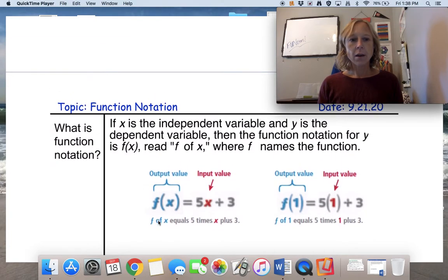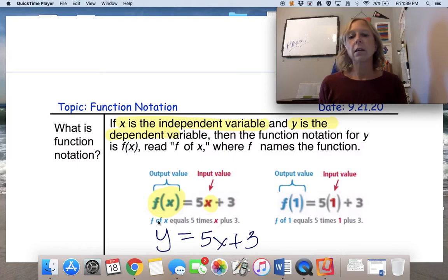So first thing, what is function notation? In function notation, x is what we call the independent variable, and y is the dependent variable. Then the function notation for y is read f of x, and f names the function. So that's the way we read this here, f of x. That's your output, your dependent variable, and then x is your input, your independent variable. We could just go ahead and replace f of x for y, and these two things are equivalent, but the top one is in function notation.